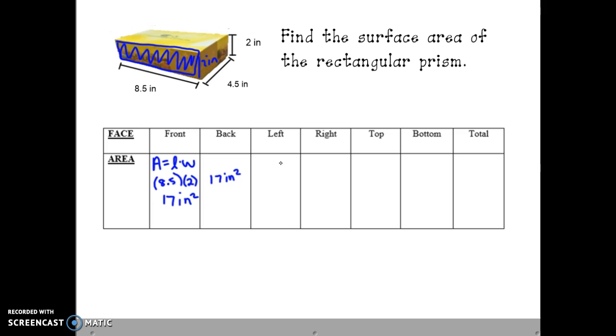Now let's find the area of the left face. Unfortunately, it's hard for me to see that in my picture. So instead, I can use the dimensions of the right face because I know that the right face is congruent to the left face. So if the right face has a length of 4.5 and a width of 2 inches, I know that the left face has the same exact dimensions. So a equals length times width. The length is 4.5 inches. The width is 2 inches. 4.5 times 2 is 9 square inches. So both the left face and the right face each have an area of 9 square inches.